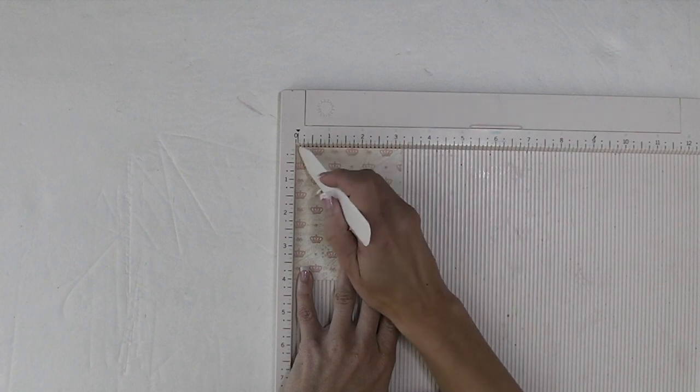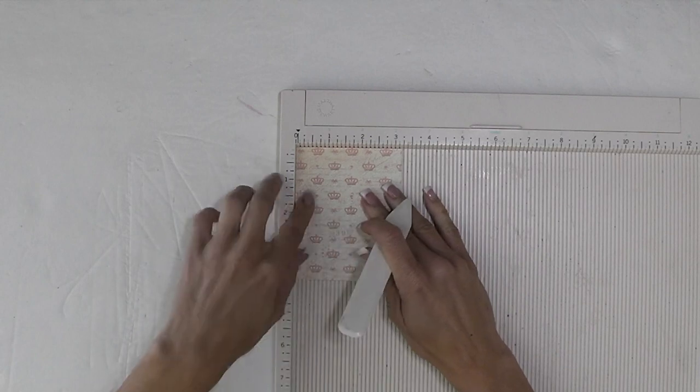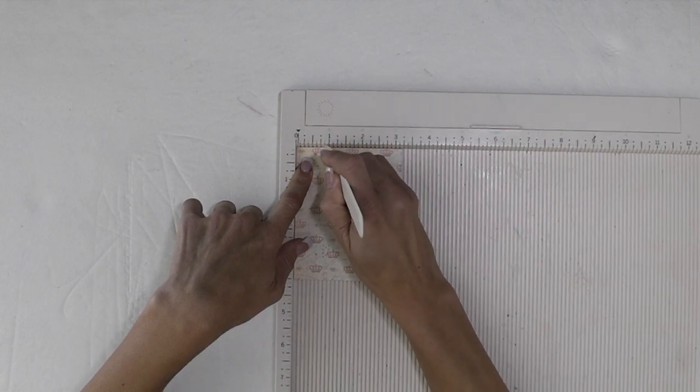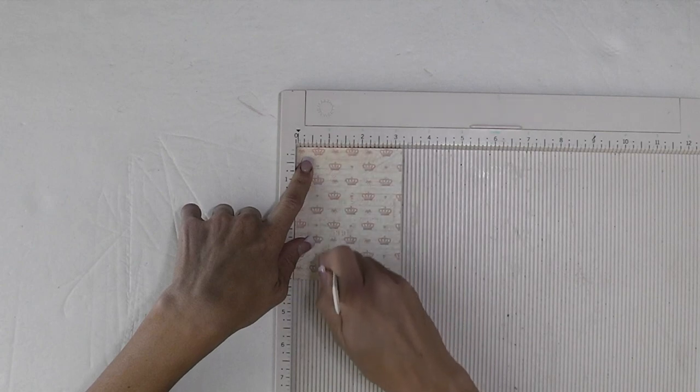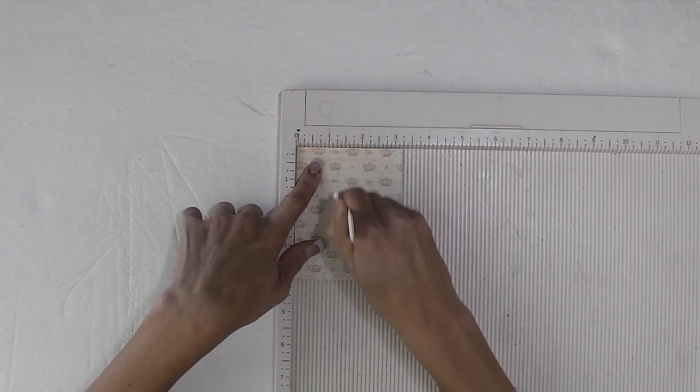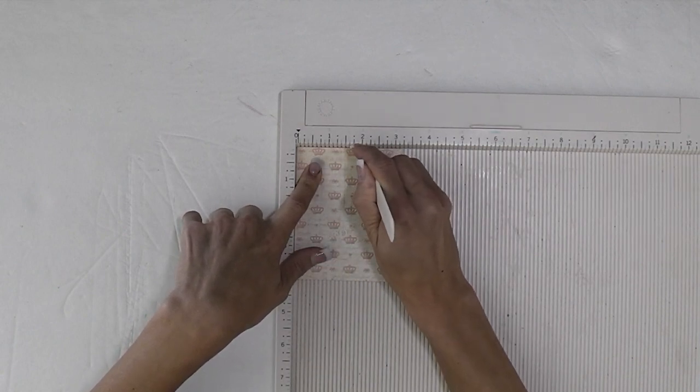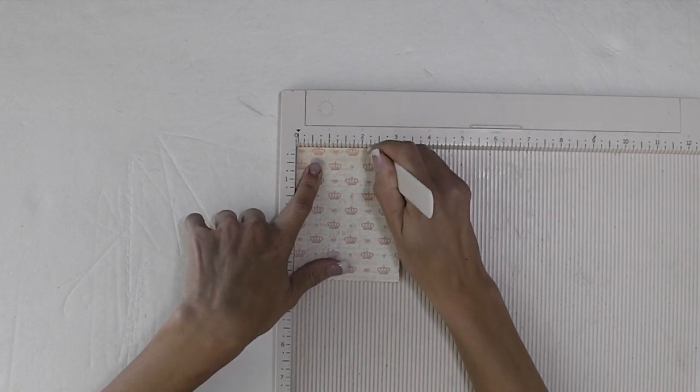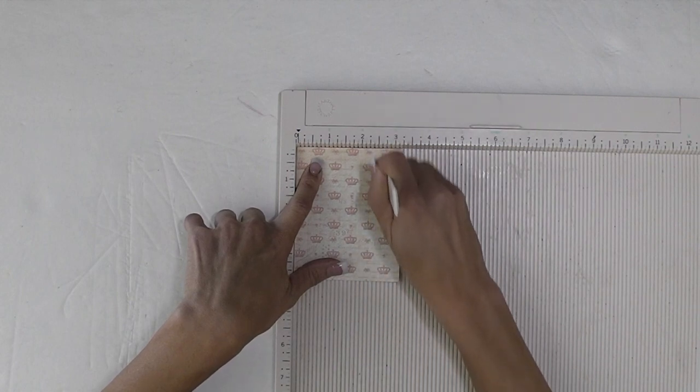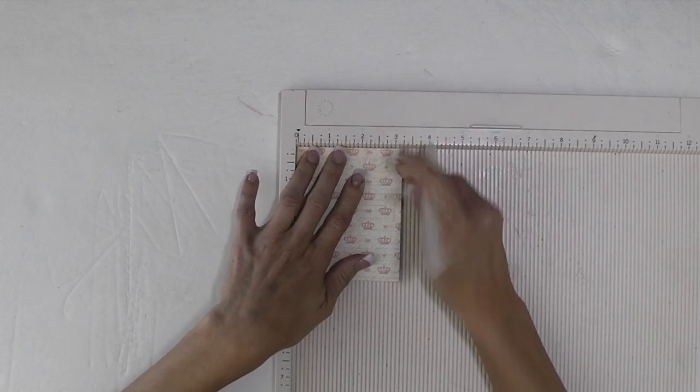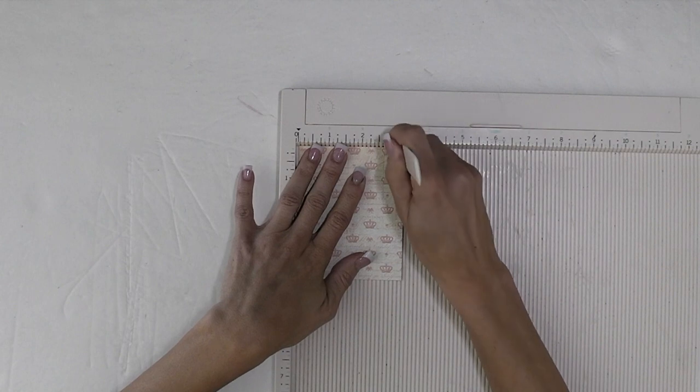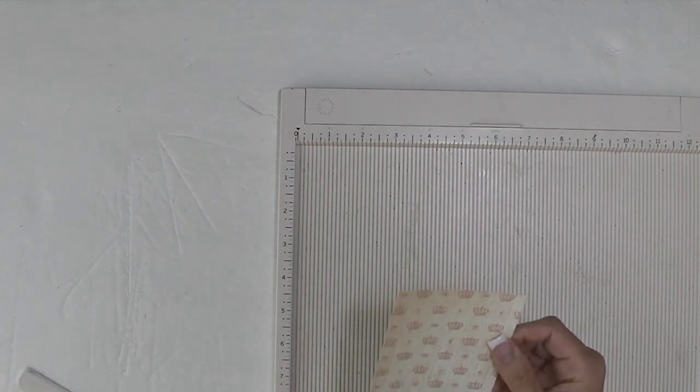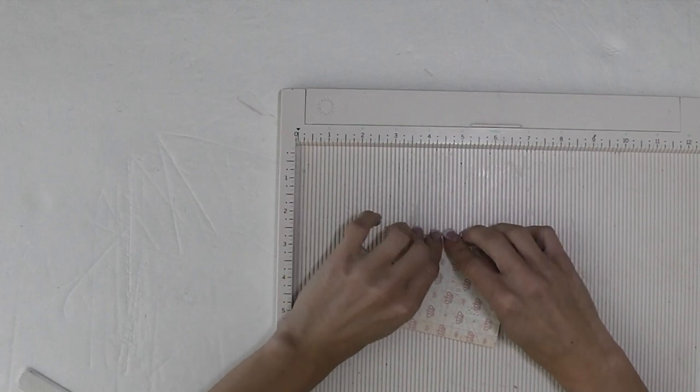So what we're going to do is we're going to take our piece of cardstock. And so we have our four inch piece going down and then three and three eighths across. And so now for every three eighths of an inch, we are going to score. So one, two, three, and score. And it's a little harder to see the score lines with the design paper, but it'll look really cute after. So another three eighths. And all the way down the length of your cardstock.